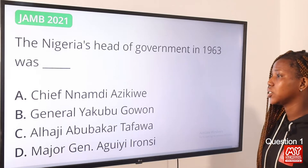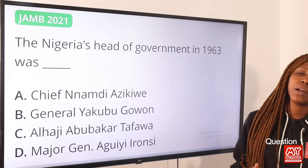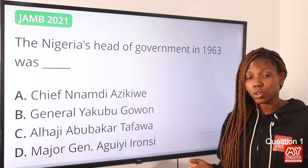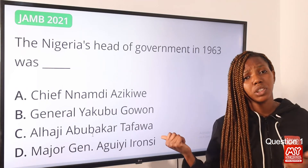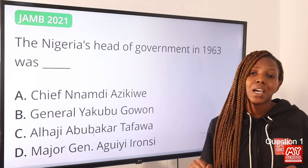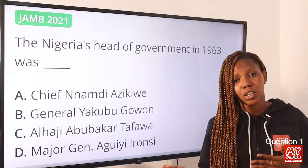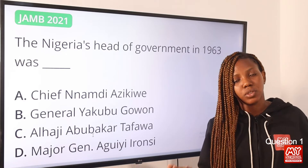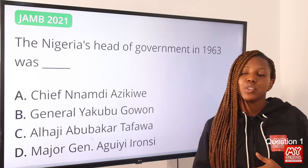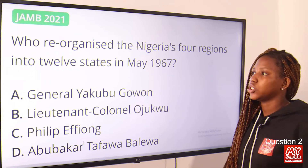Question one: The Nigerian head of government in 1963 was — the answer is option C, Alhaji Abubakar Tafawa Balewa. He was head of government from 1912 to 1966. Do not forget that the head of government is also called the Prime Minister. Dr. Nnamdi Azikiwe was at that time the President, functioning as the ceremonial head of state — similar to the Governor General — so it was just a ceremonial title.